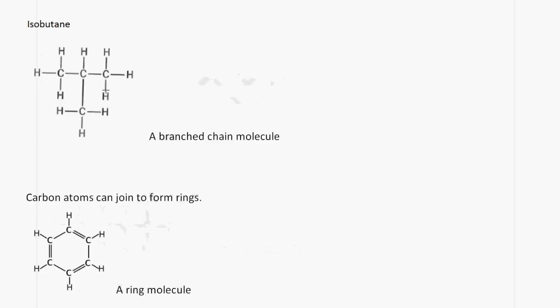Carbon can also form a branched chain molecule. Looking at this example here, we have three carbon atoms in a row and we have this group being a branch to the main chain.